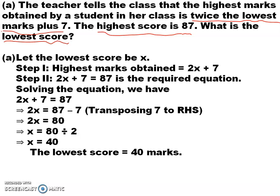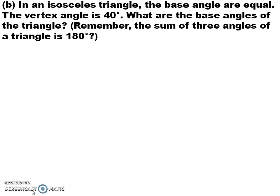So the lowest score is equal to 40 marks. Students, what was the first thing I did in solving the problem? First, I read the question. Then I read the question part by part. Then I converted the statements given in the question to a mathematical equation, and then solved the equation. Now let's see the second question. In an isosceles triangle, the base angles are equal. The vertex angle is 40 degrees. What are the base angles of the triangle?